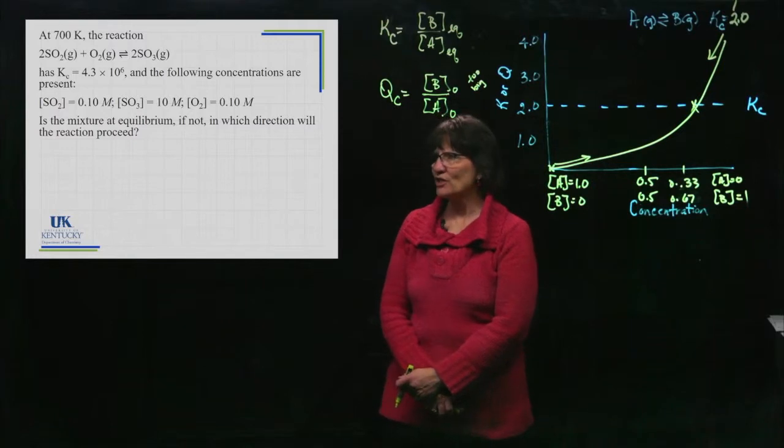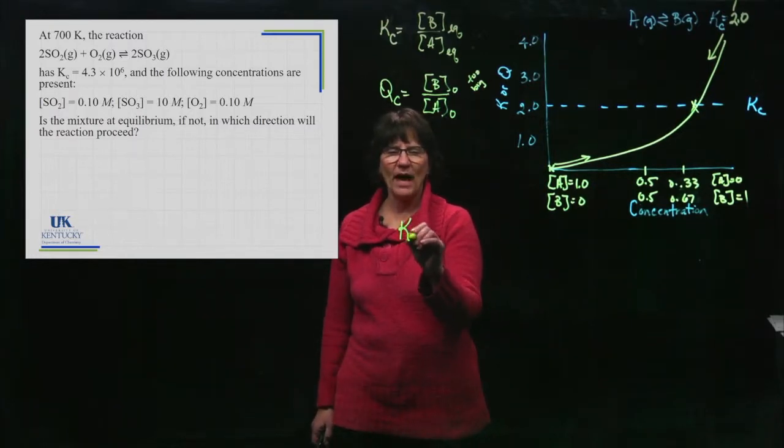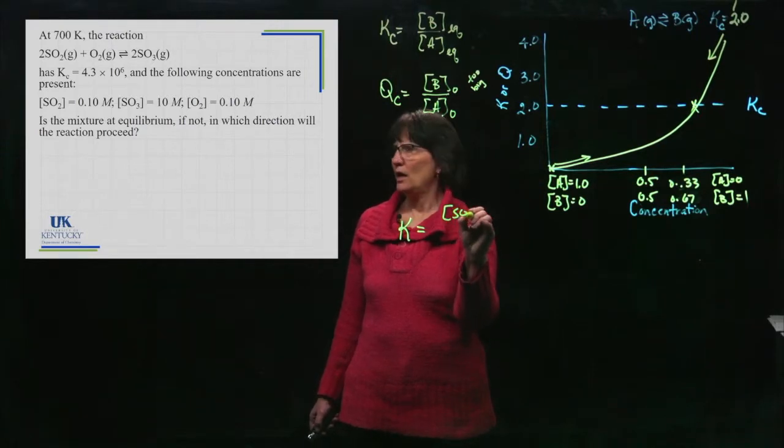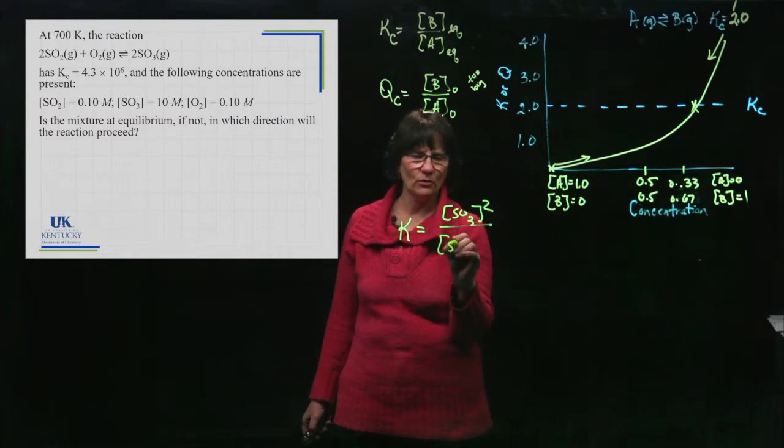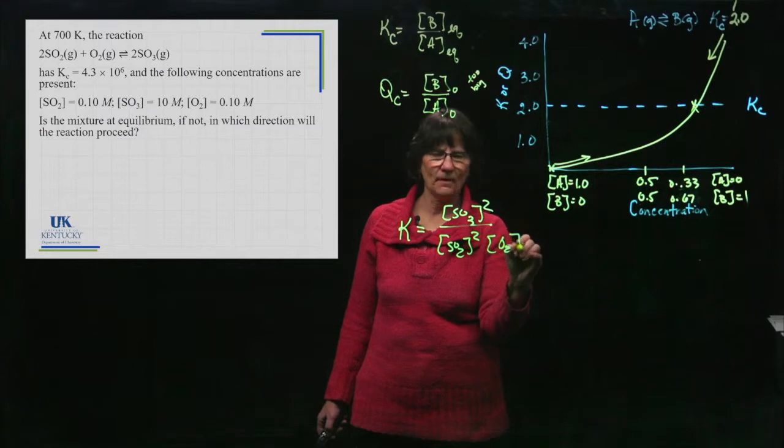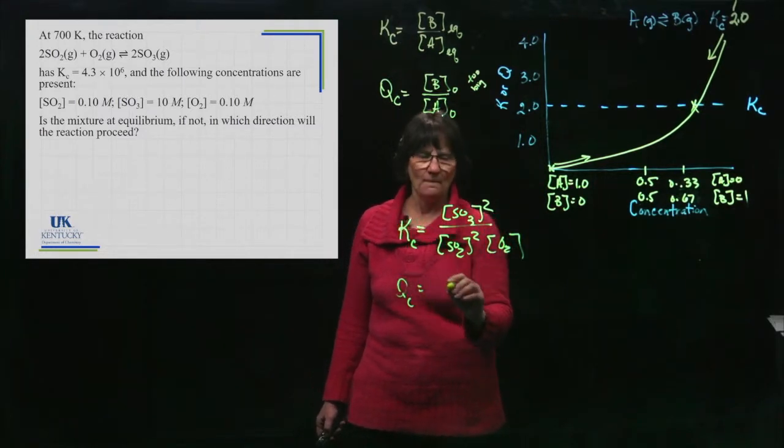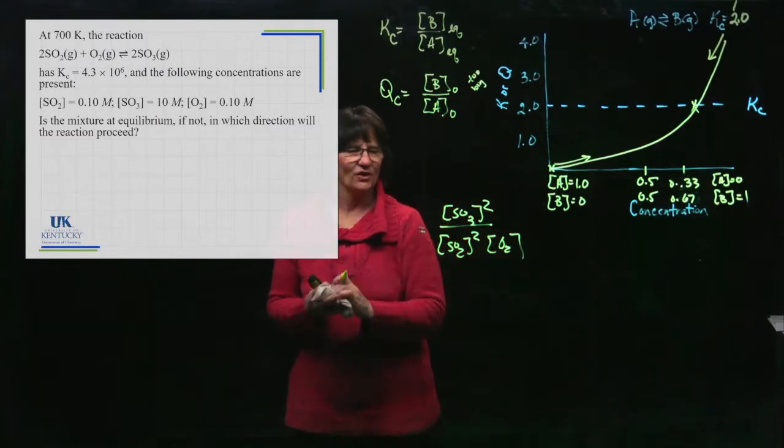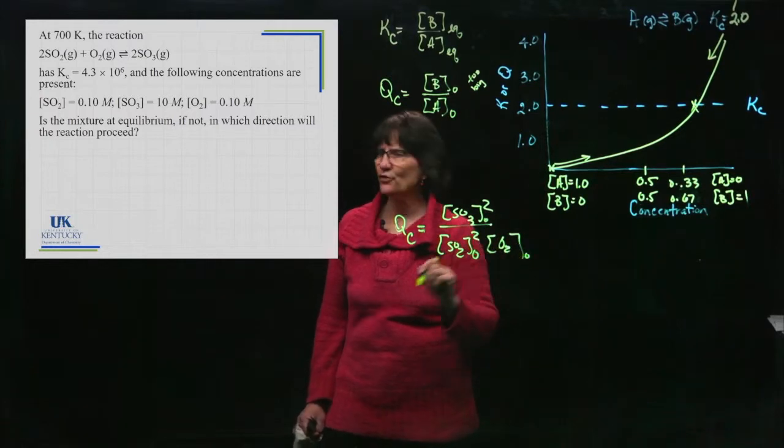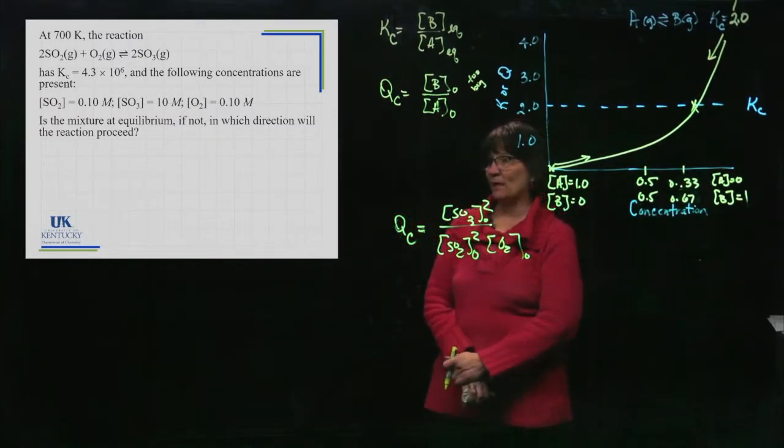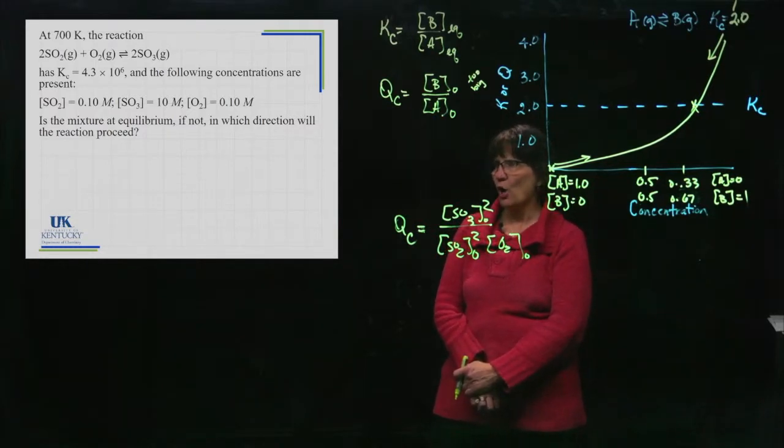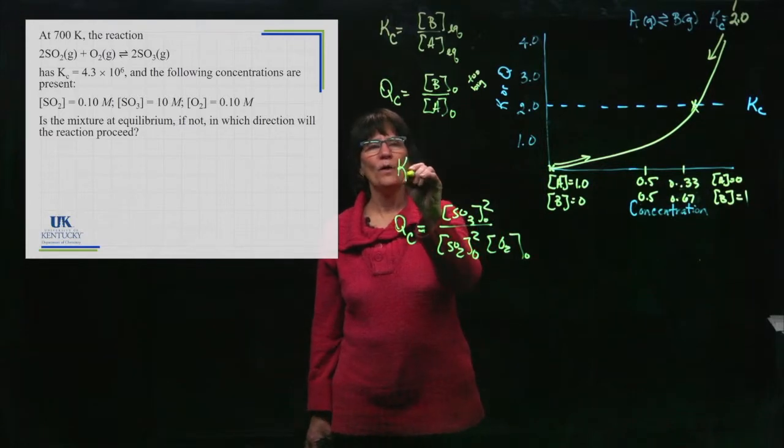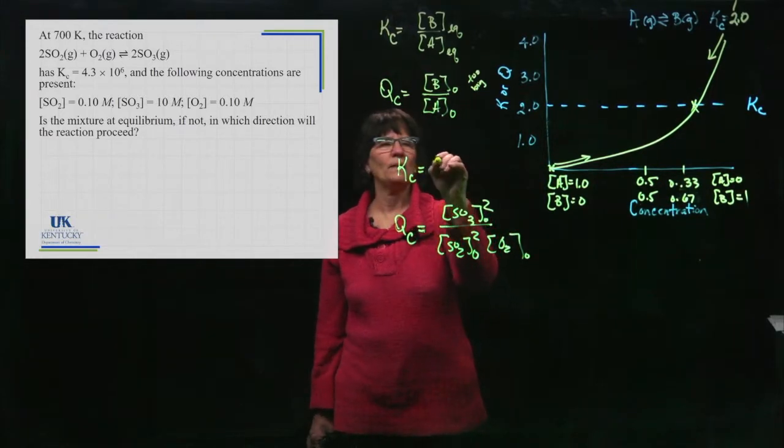Okay, so here we have a problem. We have a reaction given to me, so I might as well write the K expression and the Q expression, which they look the same but one's with equilibrium. K would be SO3 squared over SO2 squared times O2, right? Q would look exactly the same. I'm going to change that to a Q and know that I'm where I am now. Where am I right now? That's what they gave me. The following concentrations are present and they want to know whether or not this reaction is going to proceed to the right to form more products or to the left to form more reactants. We know we have a value of Kc given to us. It is 4.3 times 10 to the sixth.